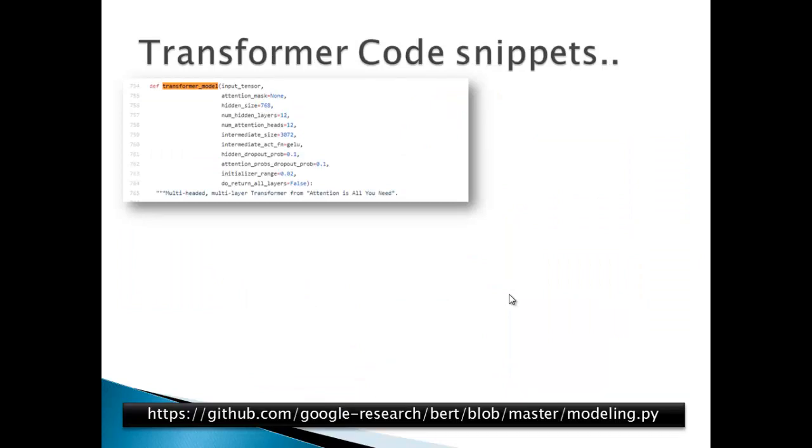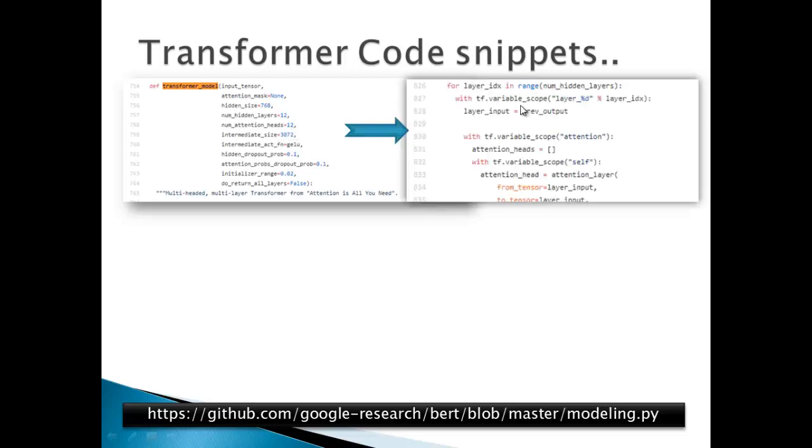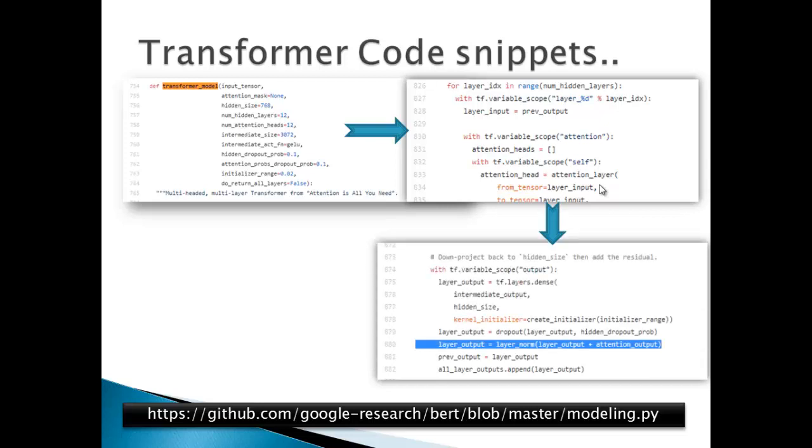Let me show you some code snippet as well so that developers can also get comfortable. Location of the original file is shown here. This is the original modeling file released by Google in the BERT code. They have created a transformer layer function. You can see these are all the parameters that are passed, for example, how many hidden layers are there and how many attention heads are there. In the second snippet, you can see for the number of hidden layers, a loop is getting generated to generate those many attention layers. This is the attention layer getting generated and it is called attention head. There were 12 hidden layers. In this last slide, you can see this layer normalization and the residual connections are being built into the highlighted text.